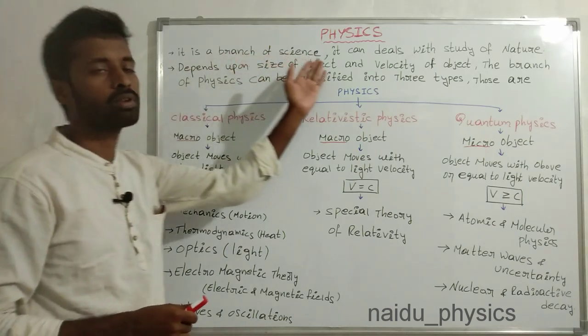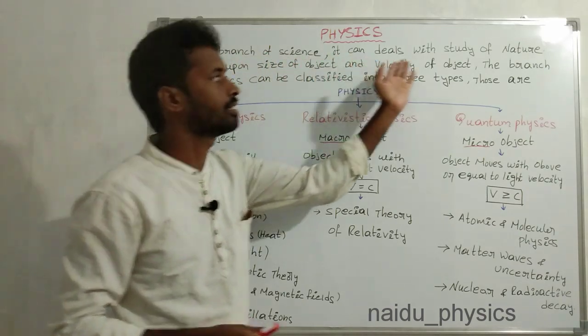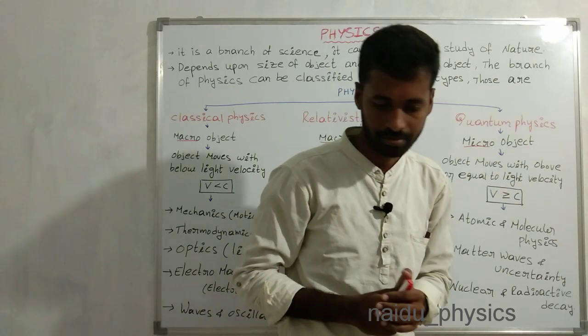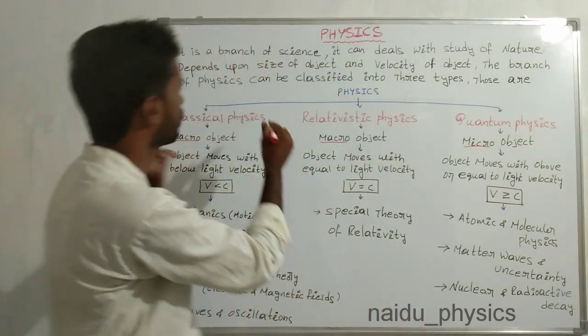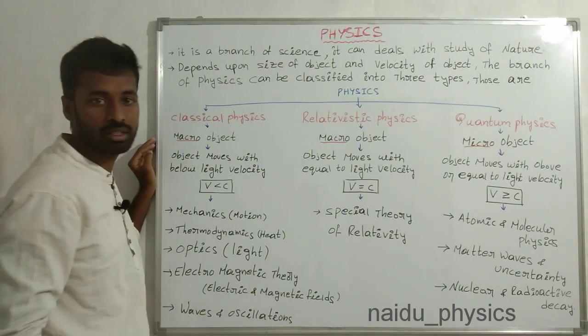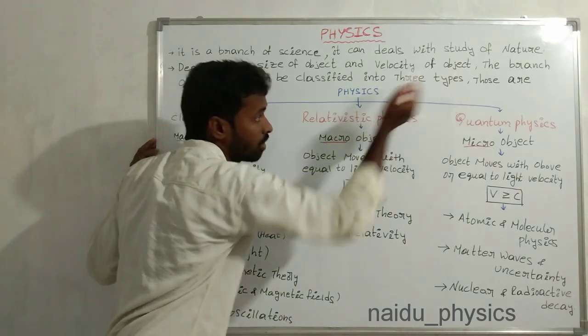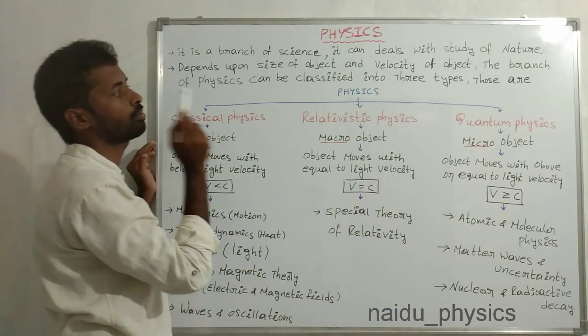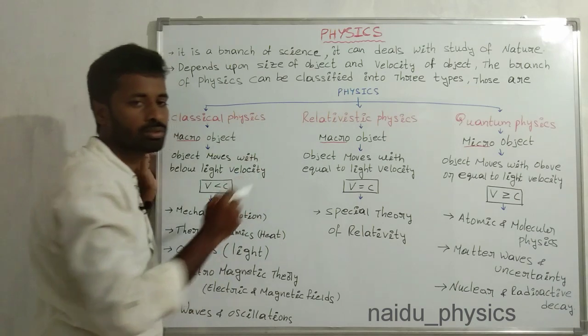Physics is a branch of science. Depends upon size of object and velocity of object, the branch of physics can be classified into three types.